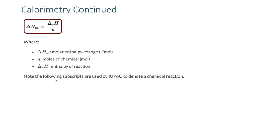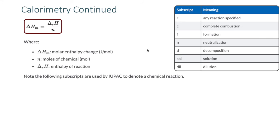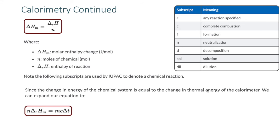We use subscripts to designate the type of reaction taking place — R for a general reaction, C for combustion, F for formation reaction, and so on. Since the change in energy of the chemical system equals the change in thermal energy of the calorimeter, we can expand our equation so that N·delta RHM equals MC·delta T, where the right side represents changes in the calorimeter and the left side represents the change in the chemical system.